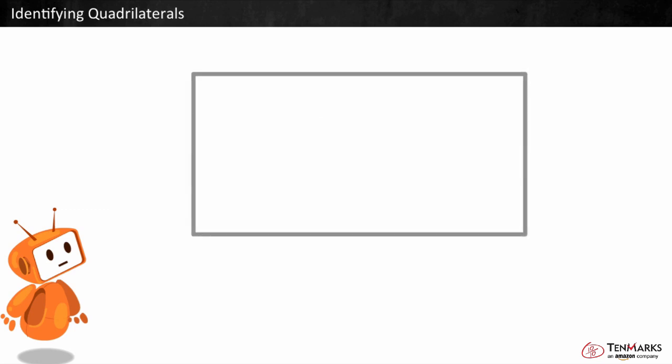Another way to identify quadrilaterals is to look at the sides. Some shapes have parallel sides, which have opposite sides that stay the same distance apart like this.